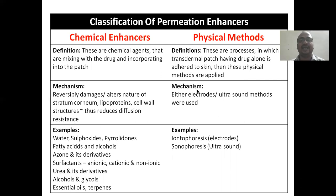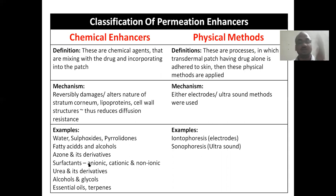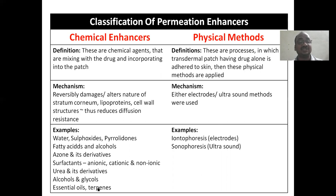For physical methods, either an electrode with small current (iontophoresis) or ultrasound is used to enhance penetration. Chemical enhancers include: water, DMSO (dimethyl sulfoxide), pyrrolidone, fatty acids, azone, alcohols and glycols, and essential oils like terpenes. All these are important chemical enhancers to write in the examination.